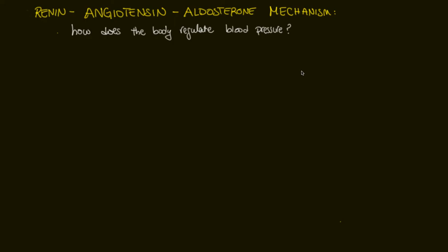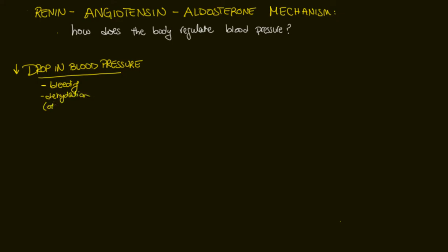The first thing that is going to stimulate activation of this renin-angiotensin-aldosterone mechanism is any drop in blood pressure. Your body has many homeostatic mechanisms and maintaining blood pressure is just one of them. In response to a drop in blood pressure — anything such as bleeding or dehydration can trigger a drop — this is going to stimulate blood pressure receptors called baroreceptors, found in the aorta and carotid arteries. They detect this drop and send a message to the brainstem to activate sympathetic nervous system fibers, which starts and triggers the renin-angiotensin-aldosterone mechanism.